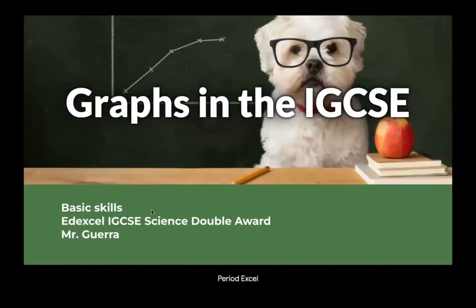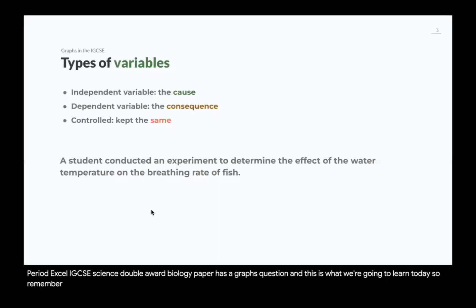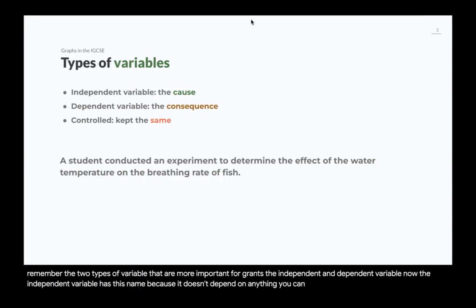Every Edexcel IGCSE Science Double Award biology paper has a graphs question, and this is what we're going to learn today. Remember the two types of variables that are more important for graphs, the independent and dependent variable. The independent variable has this name because it doesn't depend on anything. You can choose it. You can choose whatever you want.